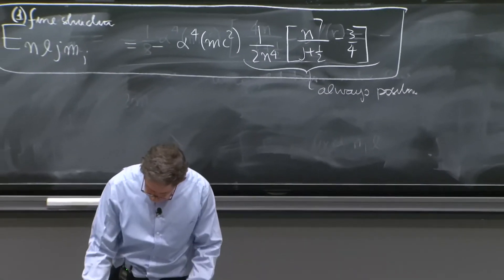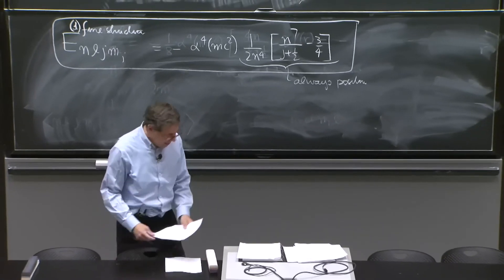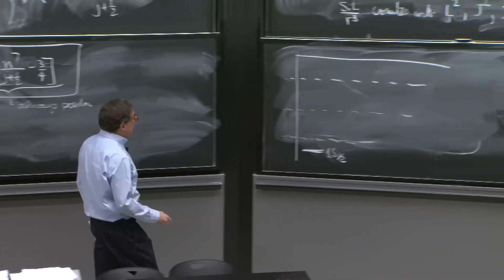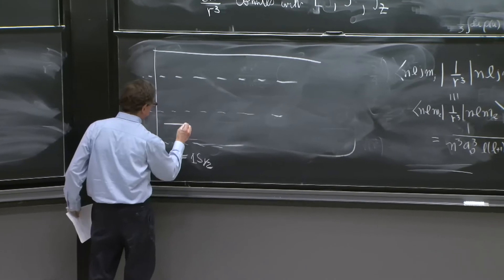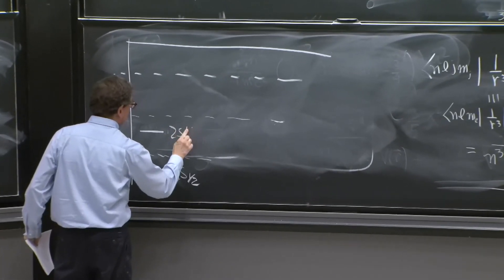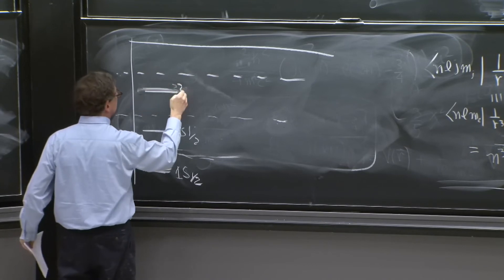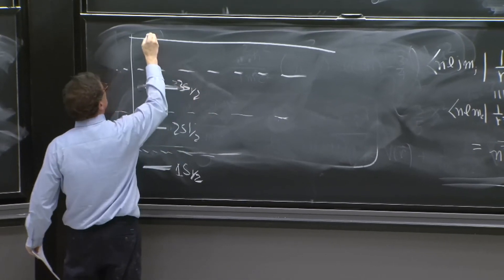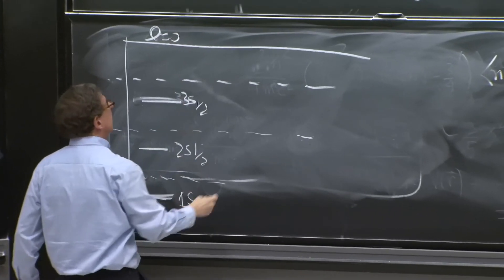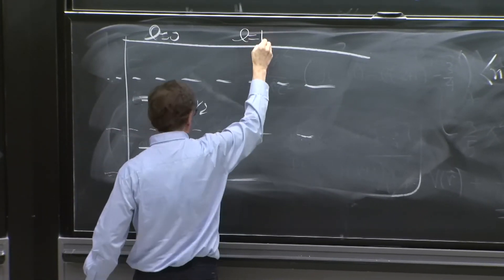Because for n equal 1, you do get a state. Then what do you get? 2 s 1 half is here. It's also down a bit. 3 s 1 half. So this is l equals 0. Then you have l equals 1.